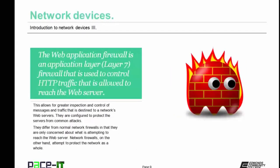The web application firewall is an application layer, or Layer 7, firewall used to control HTTP traffic that is allowed to reach the web server. This allows for greater inspection and control of messages and traffic destined to a network's web servers, and they are configured to protect the servers from common attacks. They differ from normal network firewalls in that they are only concerned about what is attempting to reach the web server, allowing for more granular control.